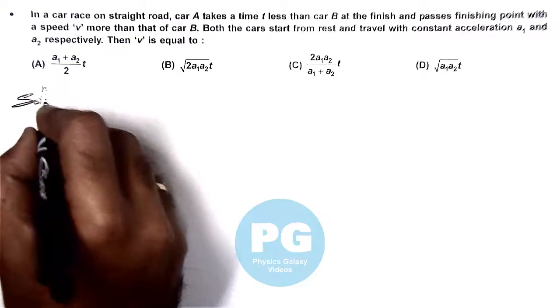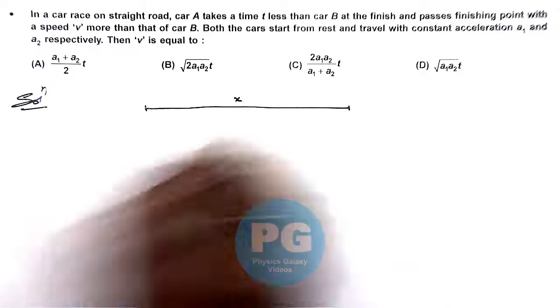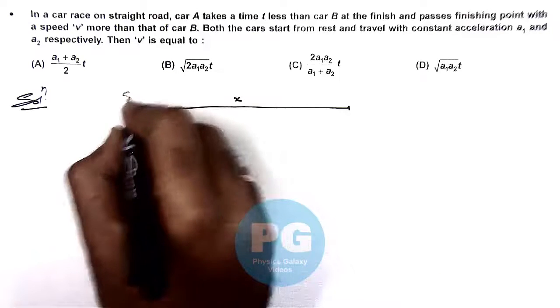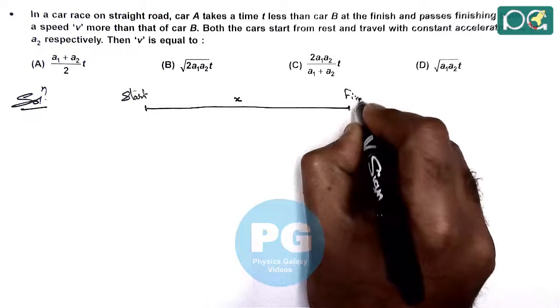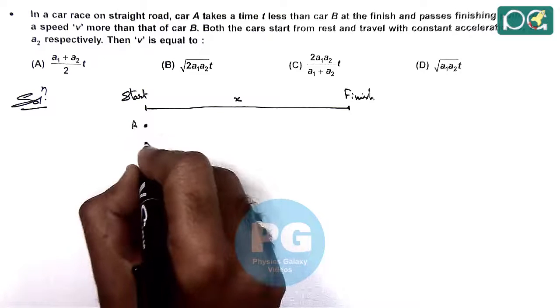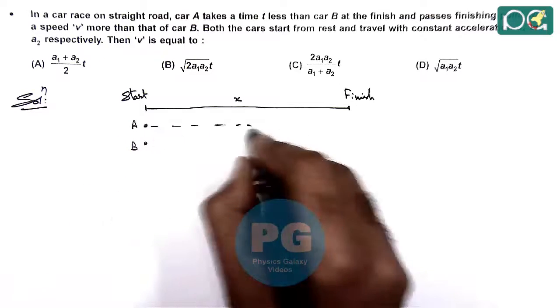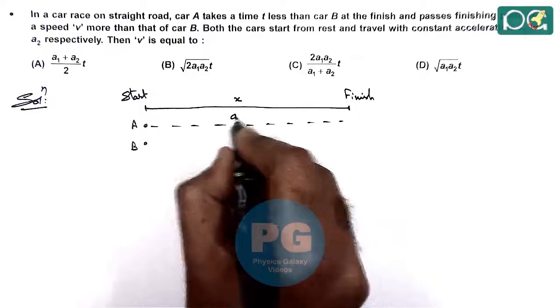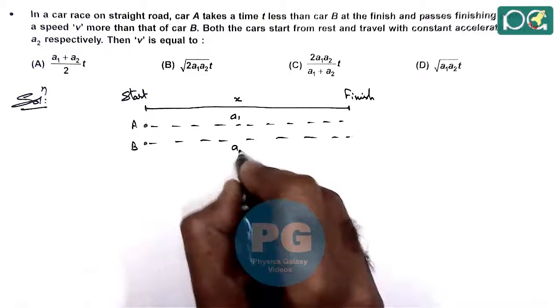So here if you visualize the case, say the distance of car race is x. This is the start point and this is the finish line. And say there are two cars A and B which are traveling the distance x with accelerations a1 and a2.